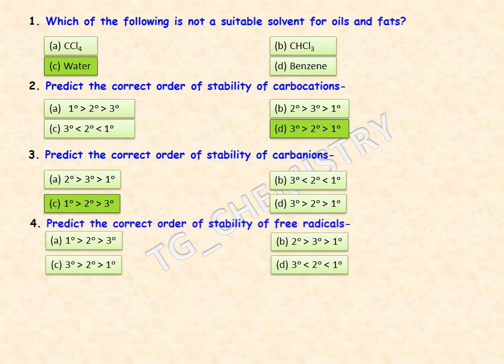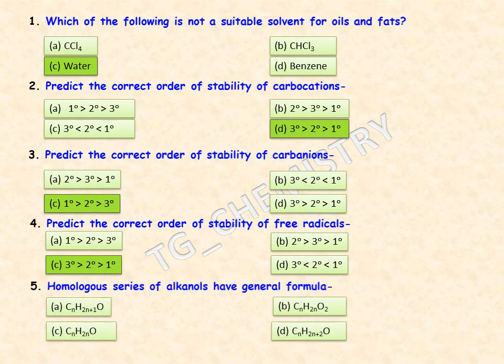Next is the stability order of free radicals. Free radicals follow the same stability order as carbocations, so option C is the right answer: tertiary radicals are more stable than secondary, and secondary are more stable than primary radicals.